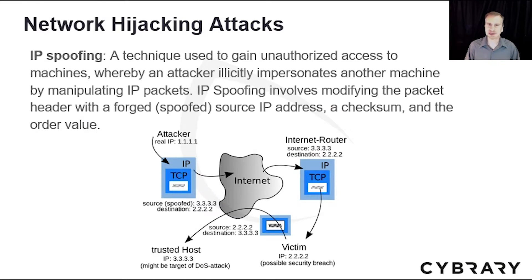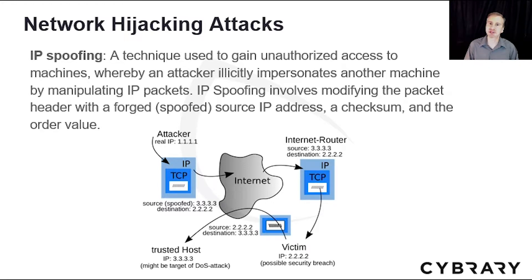IP spoofing is a similar type of attack, although it's against the IP layer of the network. It's a technique used to gain unauthorized access to machines, whereby the attacker illicitly impersonates another machine by manipulating IP packets. IP spoofing involves modifying the packet header with a forged or spoofed IP address, a checksum, and the order value.